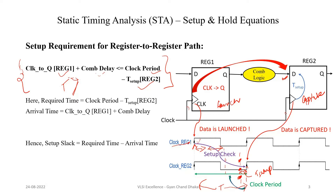The slack is the difference between the required time and the arrival time. The data arrives at one point, and the required time is the point before which data should arrive. The slack is nothing but required time minus arrival time — that is, T minus t_setup, minus the quantity clock-to-Q delay plus combinational delay. This completes the setup requirement analysis for a register-to-register path.